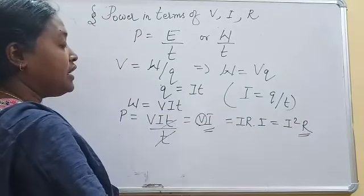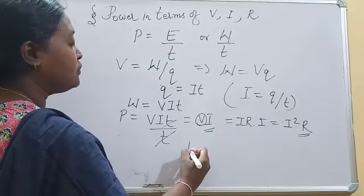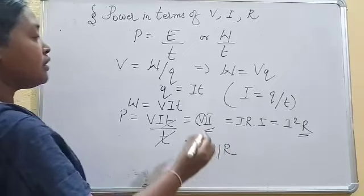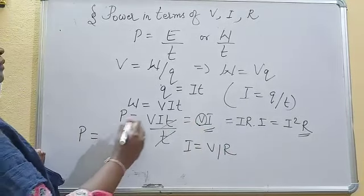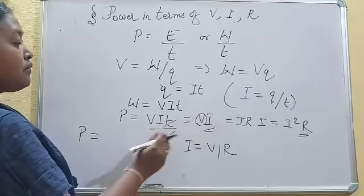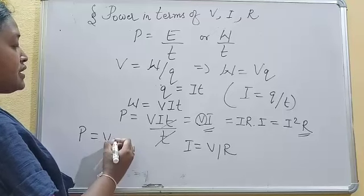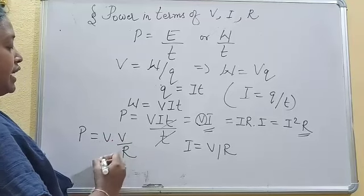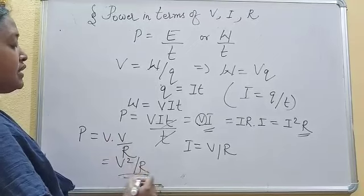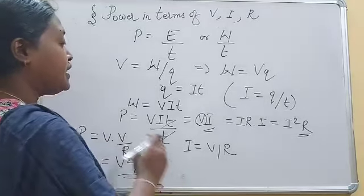In the place of I, we can write I equals V upon R, according to Ohm's law. Therefore, power can be written as V by R. That is V into V by R, that is V square upon R. This is the third form of the power.